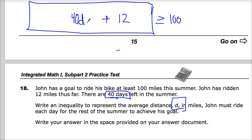Most likely John will ride different mileages over different days. But this is a math problem, so we have to pretend like everything works in a nice organized fashion. So there you go. So 40d plus 12 is greater than or equal to 100.